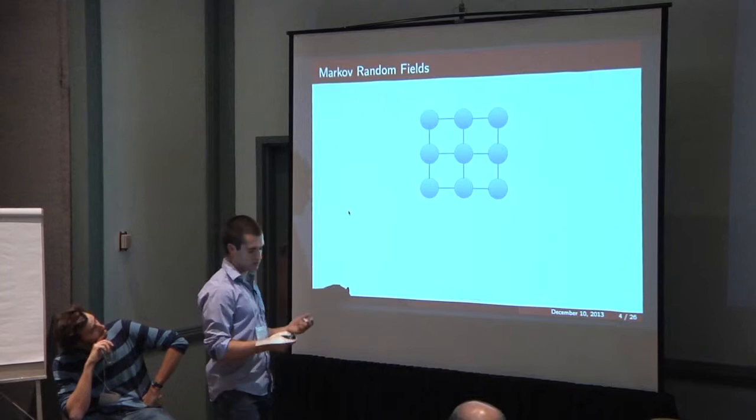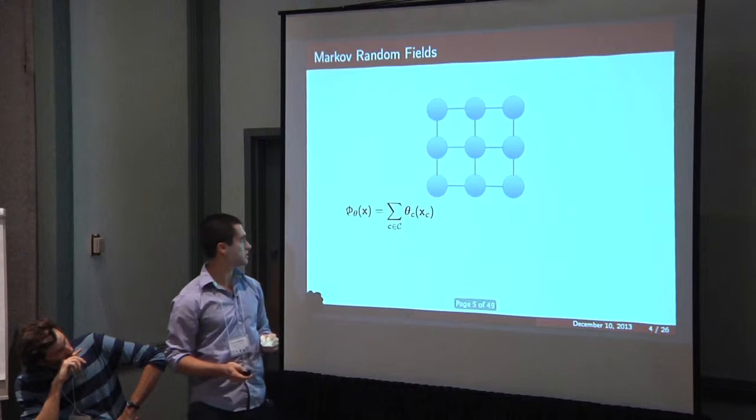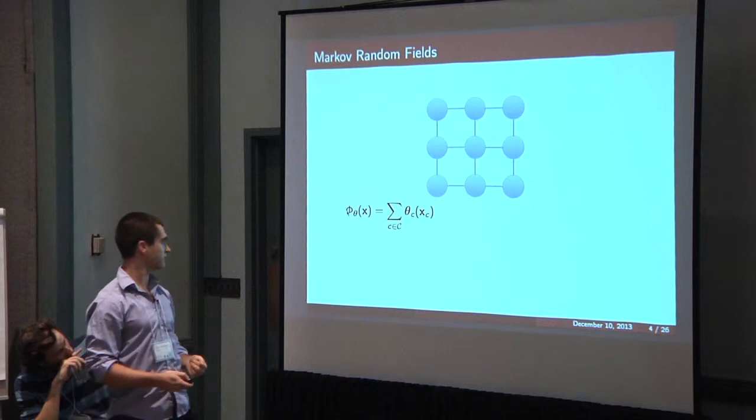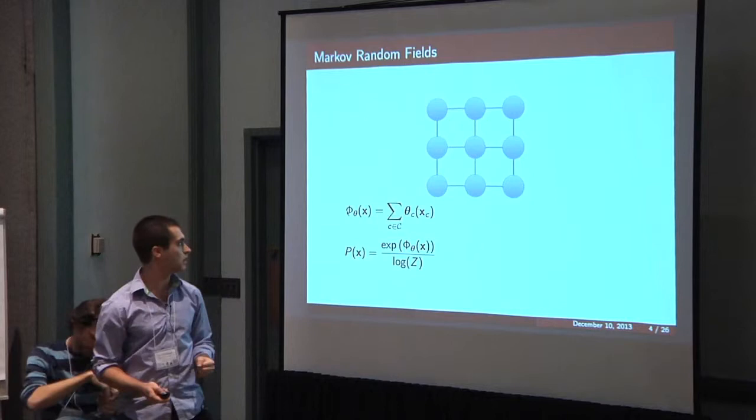In terms of Markov random fields, imagine you have a joint distribution on a bunch of variables represented by the nodes in the graph. You encode a distribution by defining an energy function on the nodes where the energy function factorizes over the cliques of the graph. Then the probability of a given configuration is just the exponential of the normalized energy of that configuration.